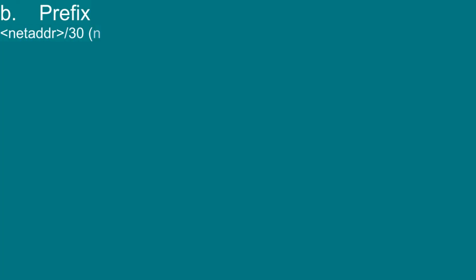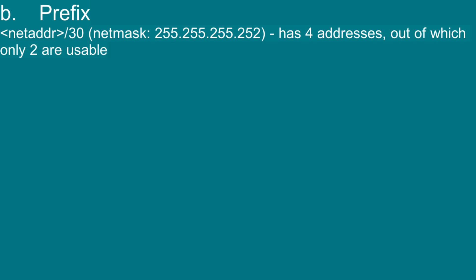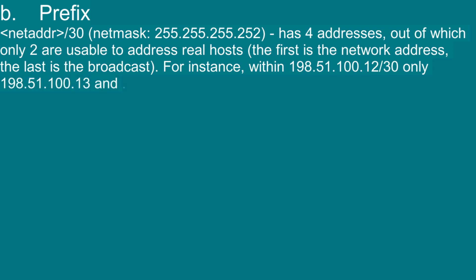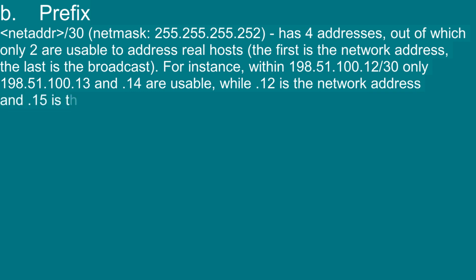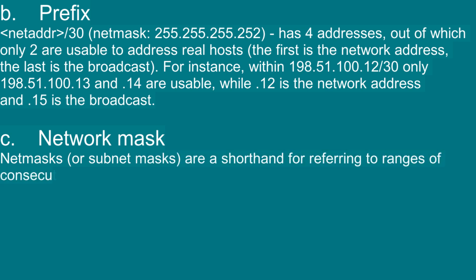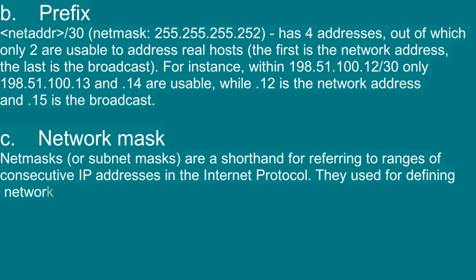B — Prefix: A network address /30 with netmask 255.255.255.252 has four addresses, out of which only two are usable to address real hosts. The first is the network address and the last is the broadcast. For instance, within 198.51.100.12/30, only 198.51.100.13 and .14 are usable, while .12 is the network address and .15 is the broadcast. C — Network mask: Subnet masks are shorthand for referring to ranges of consecutive IP addresses in the internet protocol, used for defining networking rules in routers and firewalls.